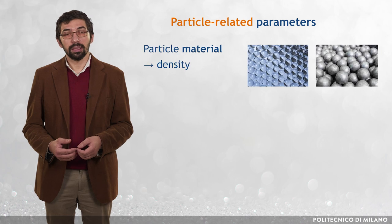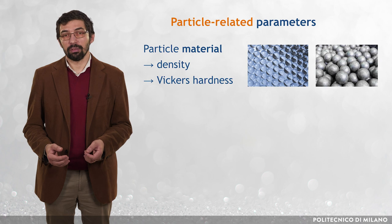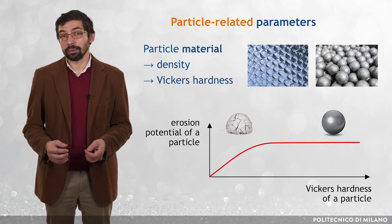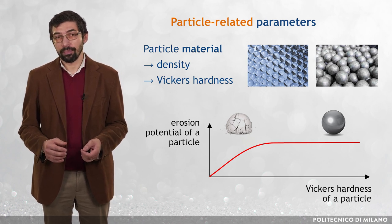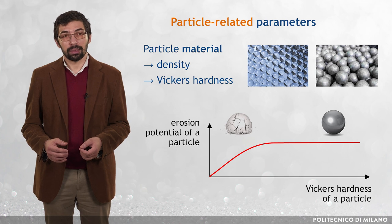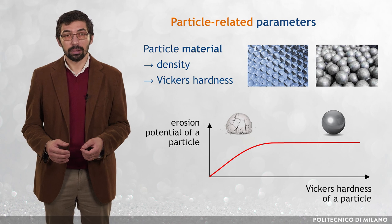The particle material is typically quantified by density and Vickers hardness. Whereas the erosion potential of a particle increases with density, the effect of hardness is not as simple, with evidence showing an initial increase followed by a plateau. The interpretation given by researchers is that particles with lower hardness are likely to shatter, and therefore they will cause less erosion. In this perspective, a better indicator appears to be the ratio between the Vickers hardness of the particles and the Vickers hardness of the target material.